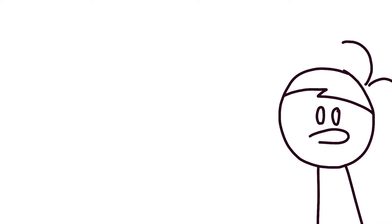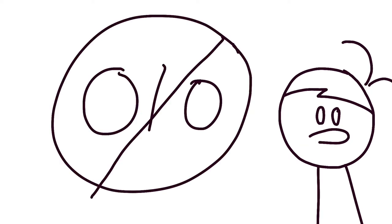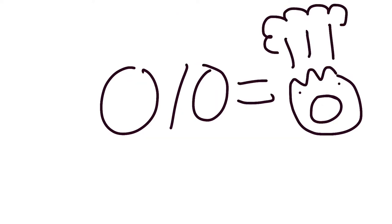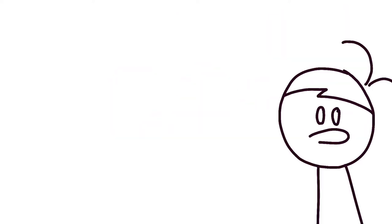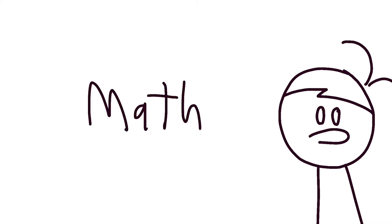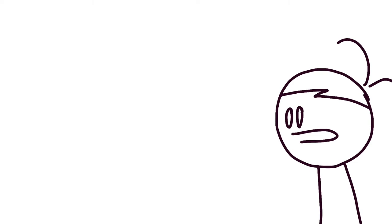Now you guys are probably wondering, well, zero divided by zero is impossible, right? There's no way to solve it. It's just an impossible thing to solve. Well, I'm going to prove you wrong today with extremely complicated math that only I can solve, because I am the smartest person in the world.